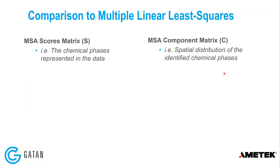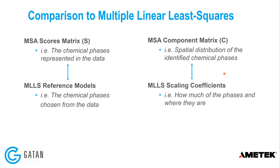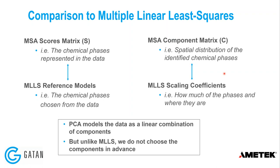We can draw a comparison to multiple linear least squares fitting. The scores matrix in PCA or MSA is equivalent to the reference models used in MLLS, and the component matrix is equivalent to the scaling coefficients — how much of each phase and where. PCA models data as a linear combination of components, just like MLLS, but the key difference is that unlike MLLS, we don't choose the components in advance. The PCA algorithm chooses the statistically significant references for us.